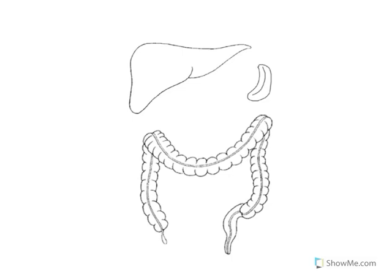We'll begin with the vena cava, which will be coming in and passing through the liver. I'm going to draw it in purple, and I'll put a couple of little dashed lines so that we know it is passing through here. Coming off of the vena cava we will give all these branches known as hepatic branches. The hepatic veins will come off of the vena cava inside the liver. That is all we really have to worry about with the liver on the top part.